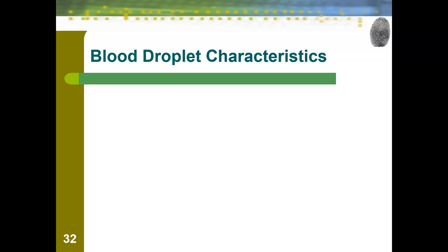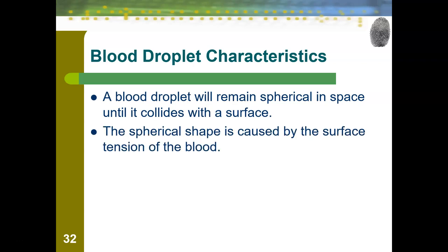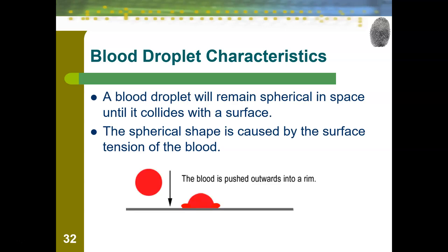Let's talk about the characteristics of blood droplets that allow this behavior. A blood droplet will remain spherical in space until it collides with a surface. The spherical shape is caused by the surface tension of the blood — blood has a very high surface tension. You can see in this image our blood droplet is falling, it is spherical in shape, and then it gets pushed outward, creating that circle as it falls.